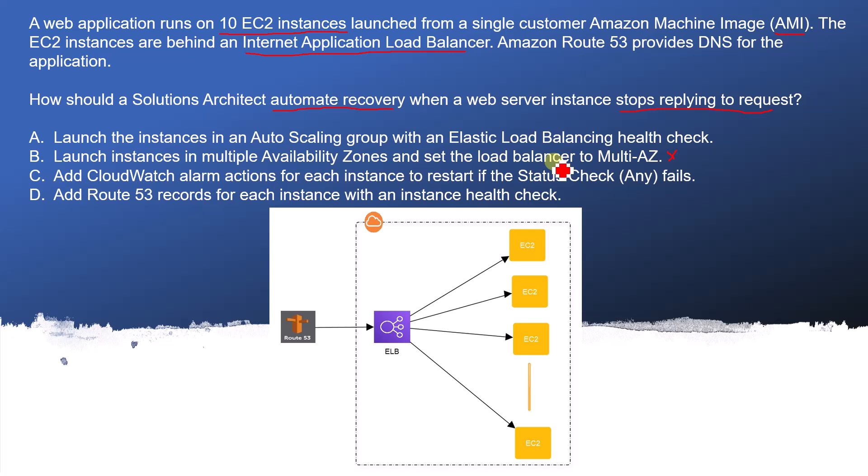Option C: Add a CloudWatch alarm action for each instance to restart if the status checks fail. It is true that with CloudWatch alarm we can try to reboot the application, but the problem is that CloudWatch alarm cannot be useful for system-level checks — it is only available for instance-level checks. So that is not the correct answer. I will mark it as wrong.